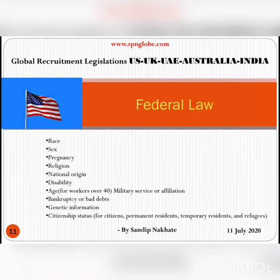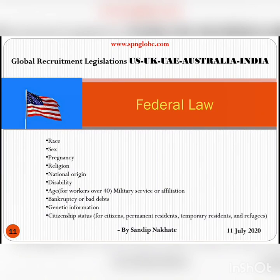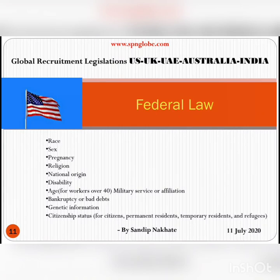Under federal law in the US, employers generally cannot discriminate against employees on the basis of race, sex, pregnancy, religion, national origin, or disabilities. You cannot discriminate against workers over 40 years of age, against military service or affiliation, against bankruptcy or bad debts, against genetic information, or against citizenship status — whether the person is a citizen, permanent resident, temporary resident, or refugee.